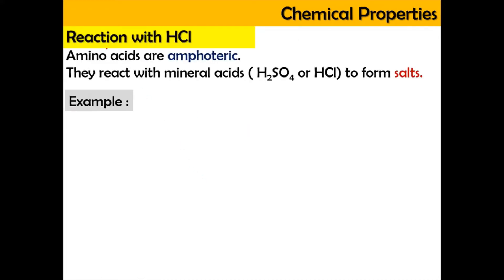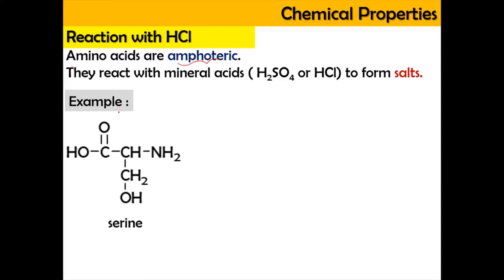The reaction with HCl: as we have known, amino acids are basically amphoteric. The meaning of amphoteric is that the amino acid can act as a base and can also act as an acid. Due to these properties, serine for example will have an acidic group and also an amino group — so here is a base and here is an acid. They are amphoteric.